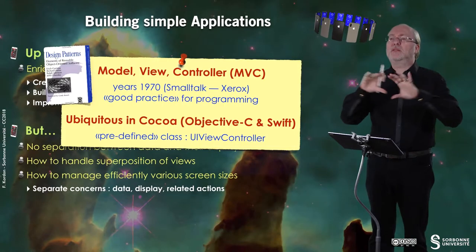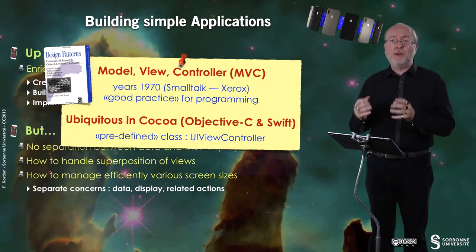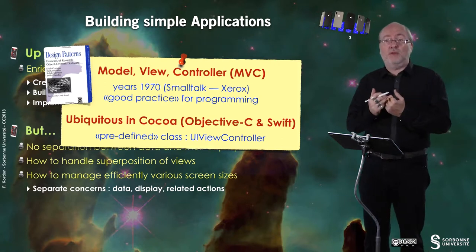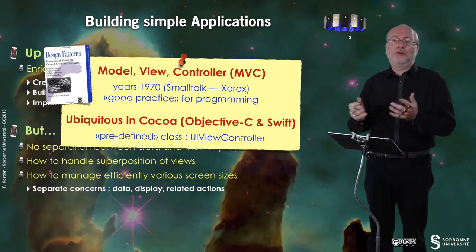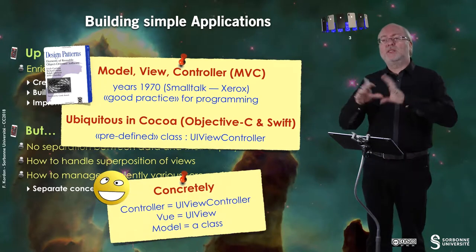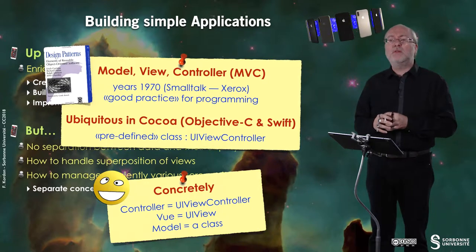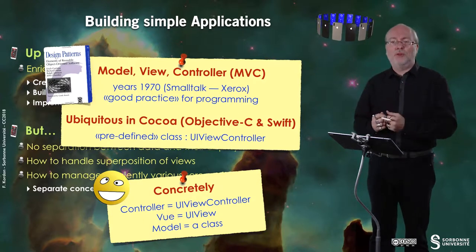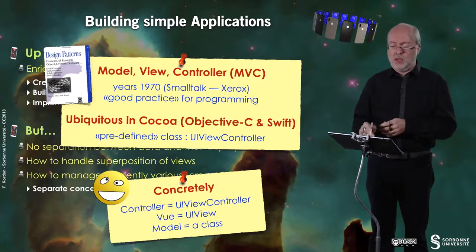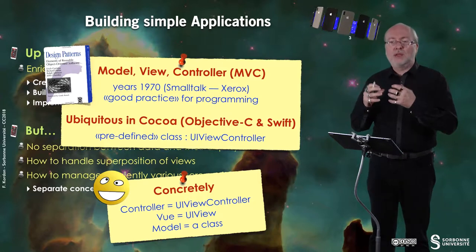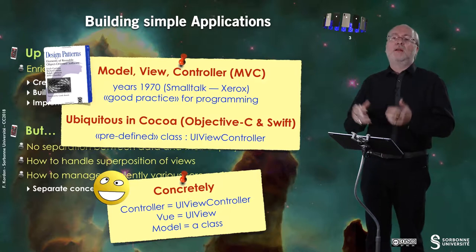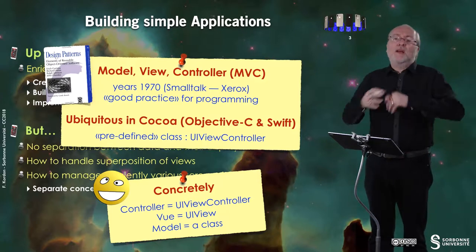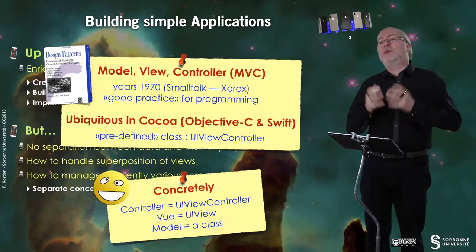This MVC model is ubiquitous in Cocoa — the user interface management framework — both in Objective-C and in Swift, because it belongs not to the language but to the frameworks. You have a predefined class for that: UIViewController. In MVC, the controller is implemented in a class inheriting from UIViewController, the view inherits from UIView, and the model is a separate class — typically inheriting from NSObject or the root class in Swift — since there is no predefined structure for the model.